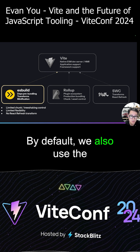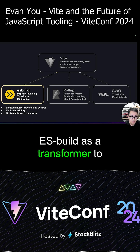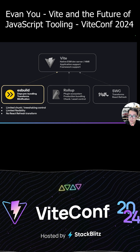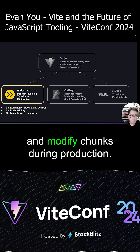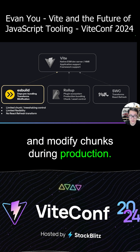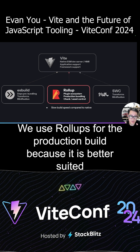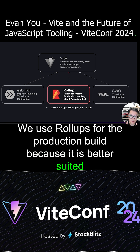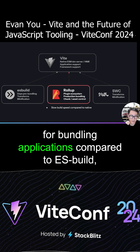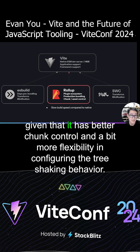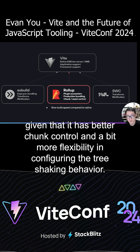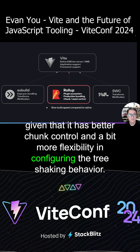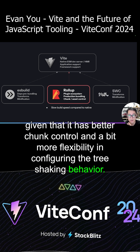By default, we also use ESBuild as a transformer to transform TypeScript, perform syntax lowering, and minify chunks during production. We use Rollup for the production build because it is better suited for bundling applications compared to ESBuild, given that it has better chunking control and a bit more flexibility in configuring the tree-shaking behavior.